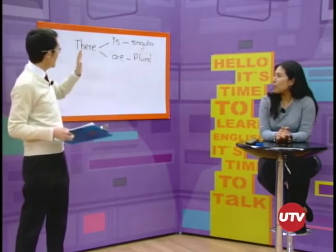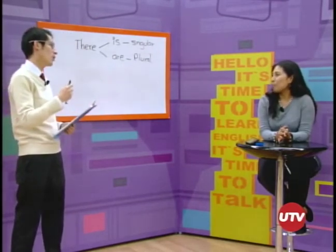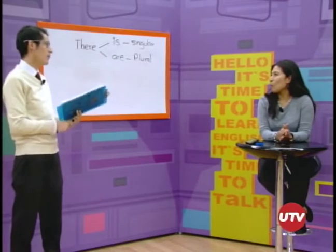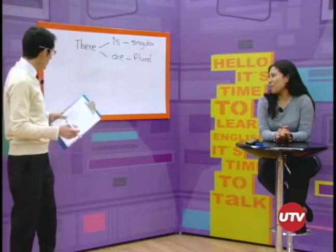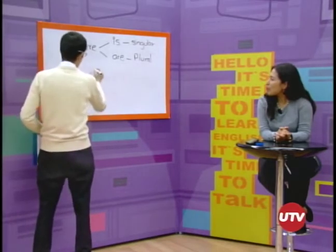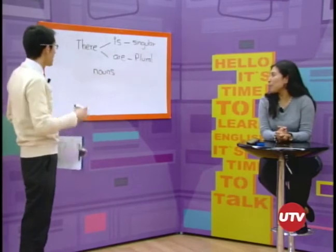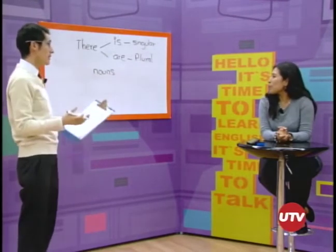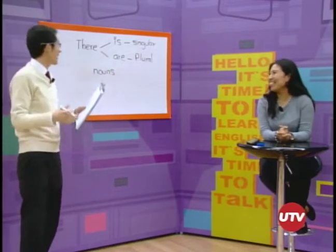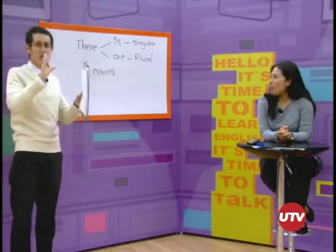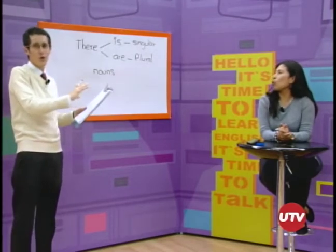Y lo que necesitamos es algo adicional: ¿cómo cuantificar algo? Podemos utilizar los nouns — sustantivos. Los sustantivos también pueden ser singulares o plurales. Entonces, si tenemos singular, todo va a ir en singular; si tenemos plural, todo va a ir en plural.